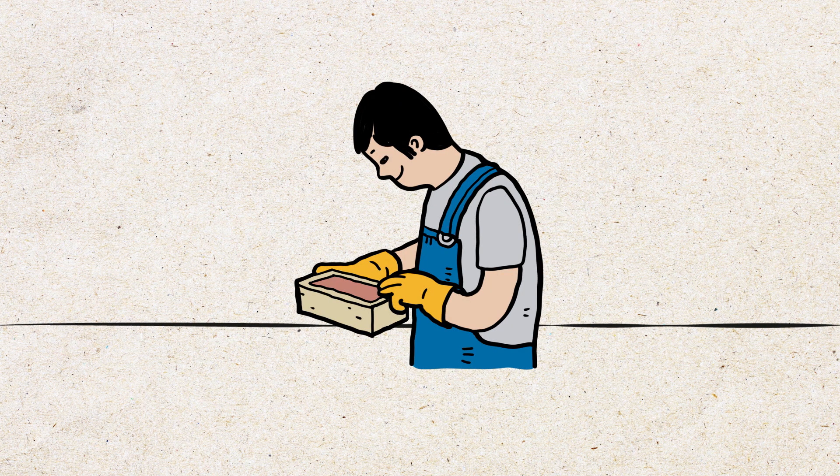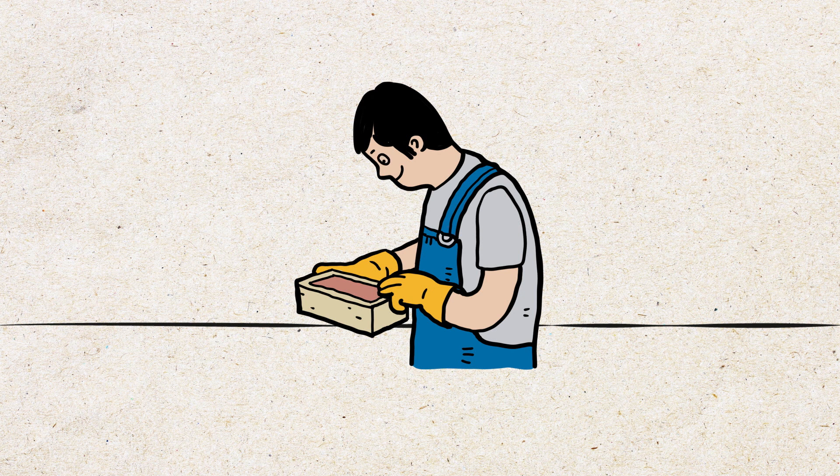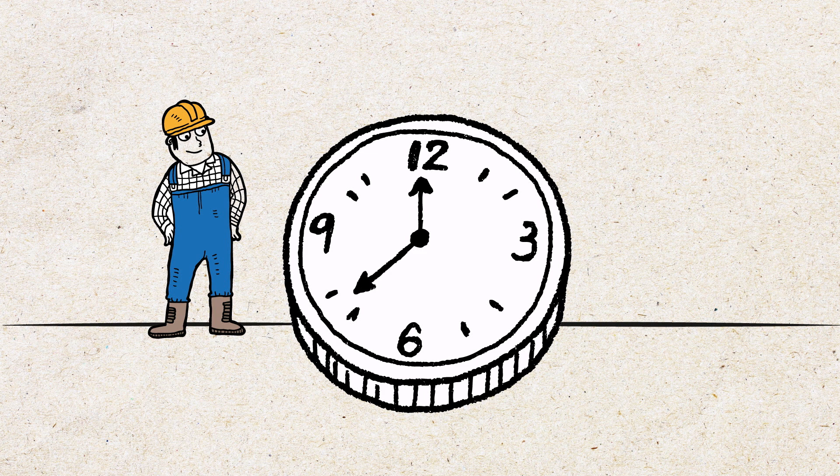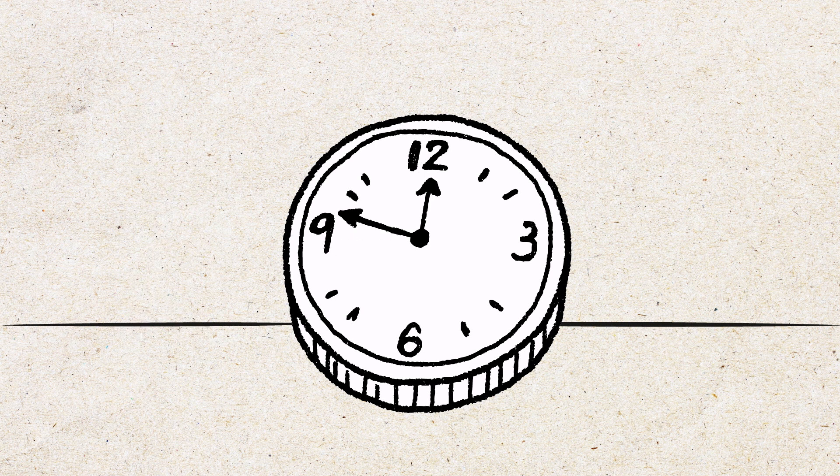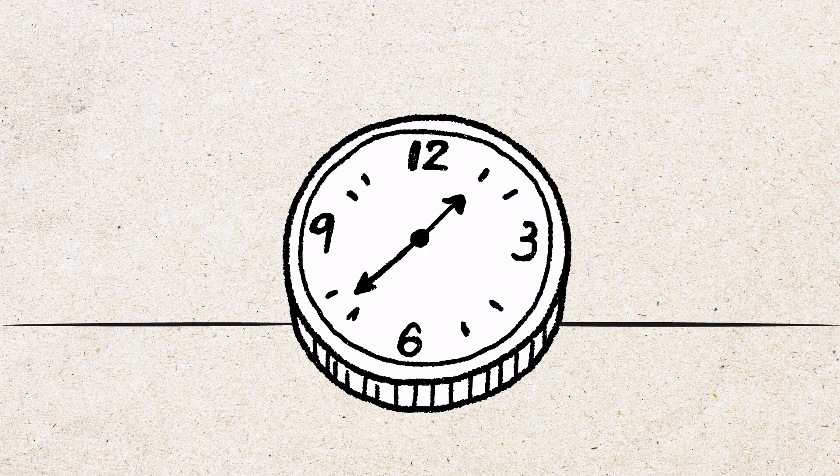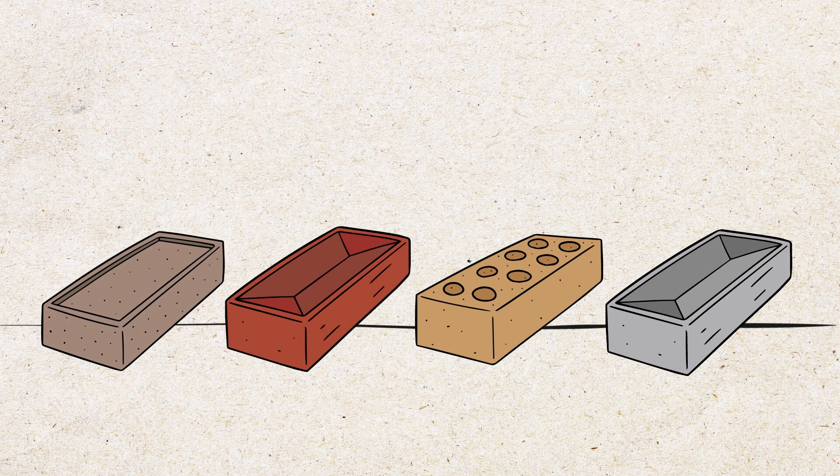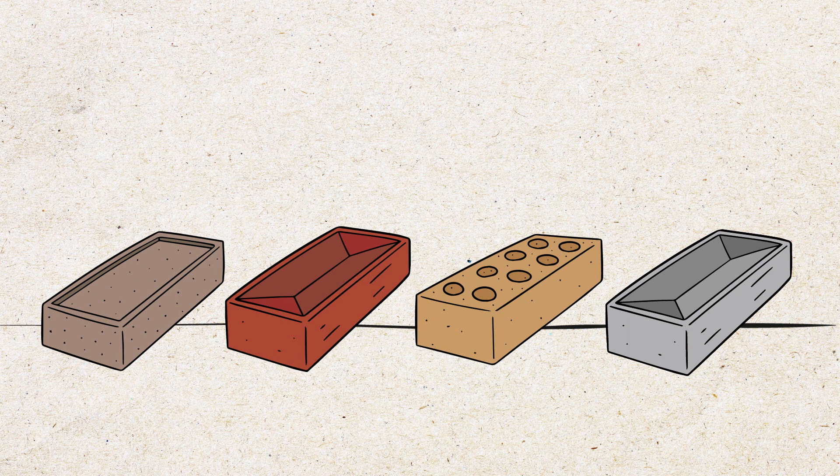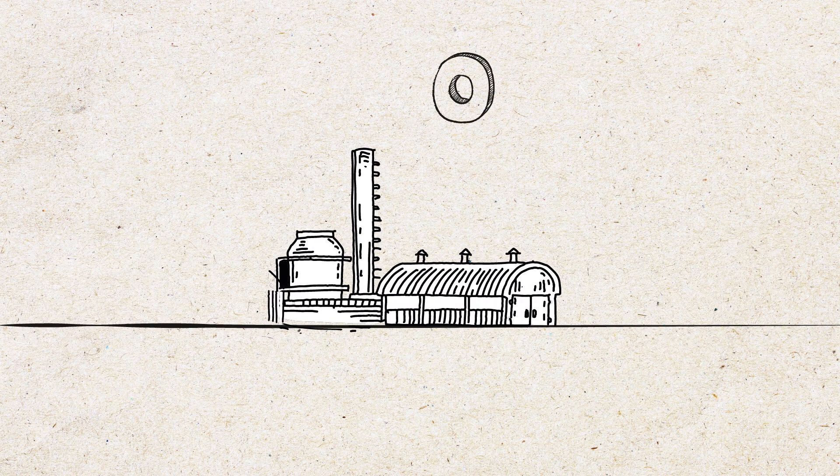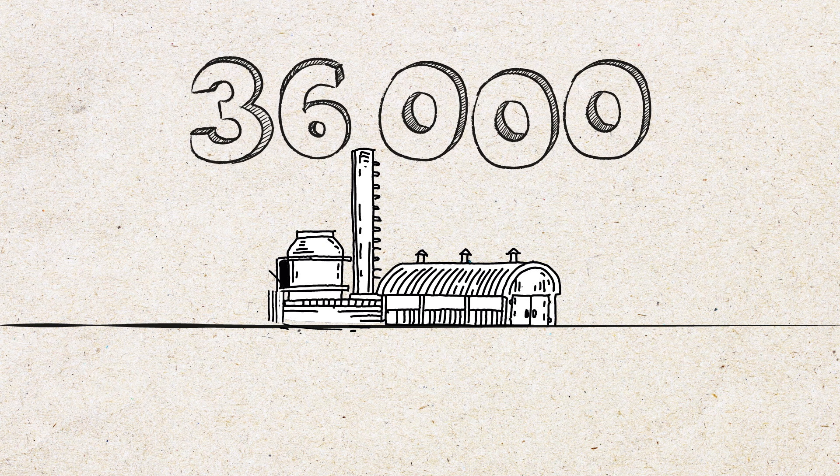To make moulded bricks, the mixture is placed into a mould box, trimmed and turned out of the box. This can be done by hand; it requires skill but is slow and makes the bricks expensive. Machines can make moulded bricks quicker. These can look like handmade bricks or can be made smoother by pressing a softer clay mixture into the mould boxes. An automated factory can make 36,000 bricks per hour.